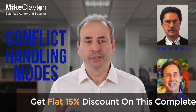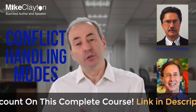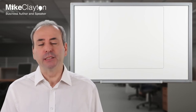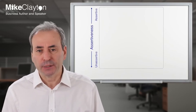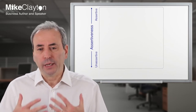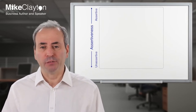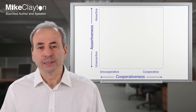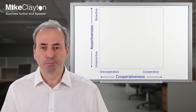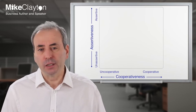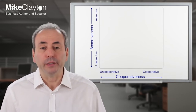Kenneth Thomas and Ralph Kilman created what are known as five conflict handling modes. Their model has an easy assessment you can use to assess your preferred conflict handling mode. They derive the five modes by looking at two characteristics: assertiveness — charted on the vertical axis, reflecting the level to which we express our desire to achieve our end goal — and cooperativeness — the degree to which we work hard to build and strengthen the relationship with the other person. Rather than a four-box model, they give us five conflict handling modes, with one in the middle as well.